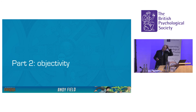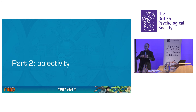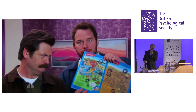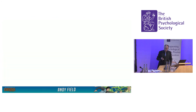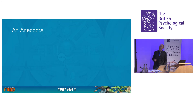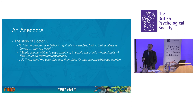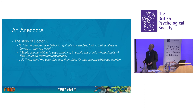A lot of the reason for this is that they can be objective. I have an anecdote to illustrate, and I want to make clear it is not directed at the person involved — it's intended as an illustration of the pressures scientists are under and the incentive structures that promote this kind of behaviour. Can people be objective about their own data? Being someone who writes statistics textbooks, I get emails from random people quite a lot. This is an example: Dr. X wrote to me and said, 'Some people have failed to replicate my studies. I think their analysis is flawed. Can you help? Would you be willing to say something public about this? This would be tremendously helpful.' And I thought, well, probably not until I've had a look at the data. So I said, if you send me your data and their data, I'll give you my objective opinion.